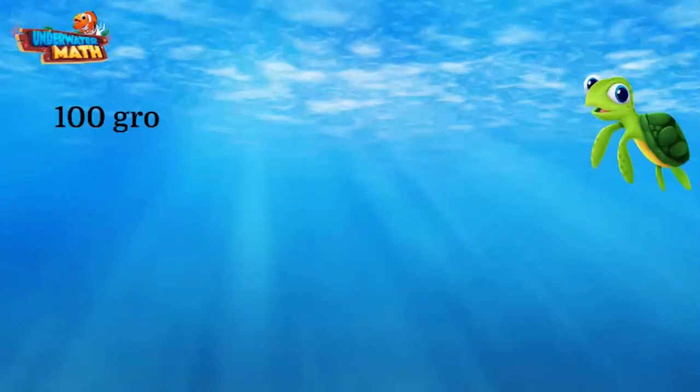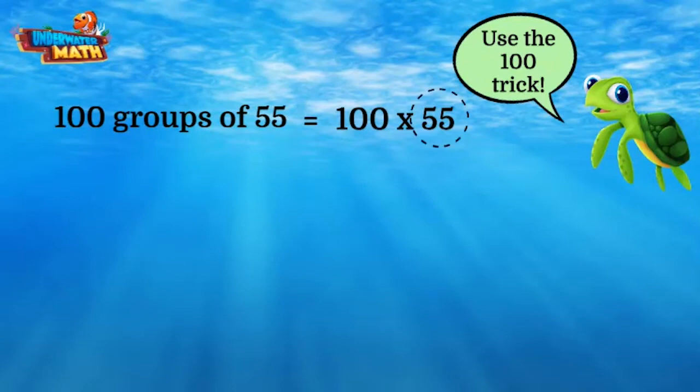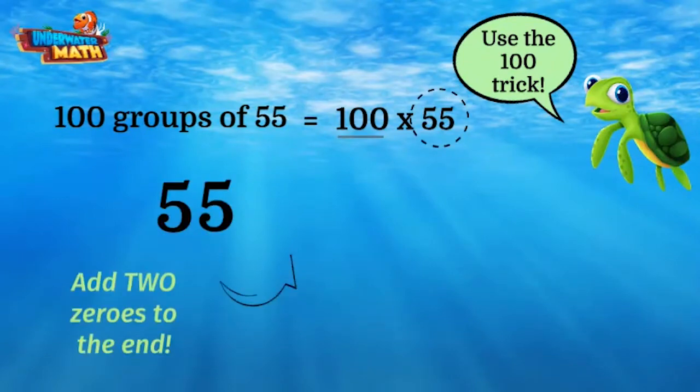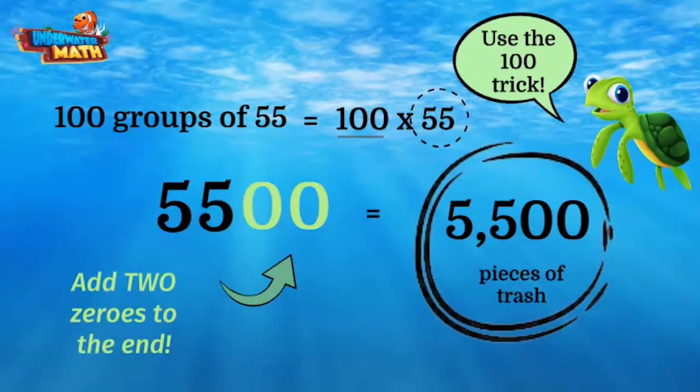Our problem is 100 times 55. How do I use the 100 trick? Genius! Add two zeros to the end of 55 to make 5,500 pieces of trash. Unbelievable, Chloe, you are my hero! These cool tricks can help us solve any multiplication of 10 or 100 problems.